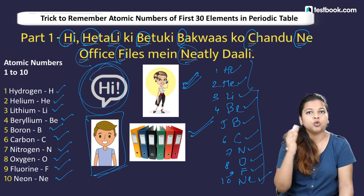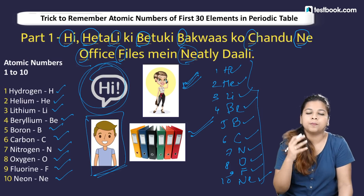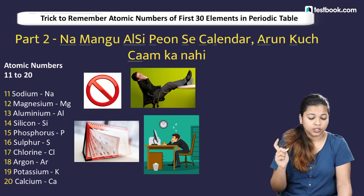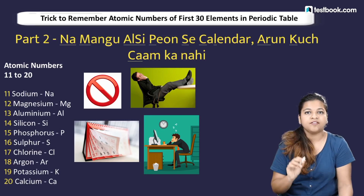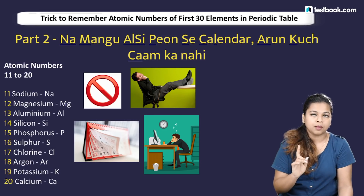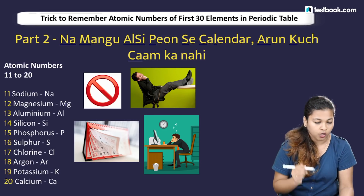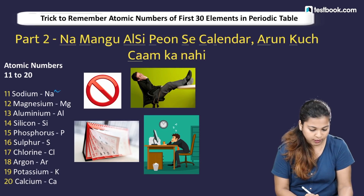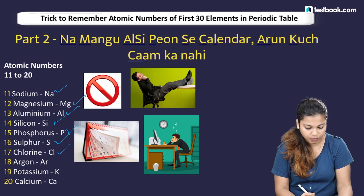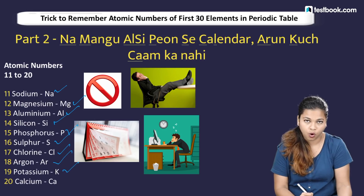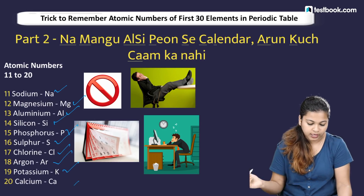Now we move on to atomic numbers 11 to 20. The elements in this range are: sodium, magnesium, aluminium, silicon, phosphorus, sulfur, chlorine, argon, potassium, and calcium.